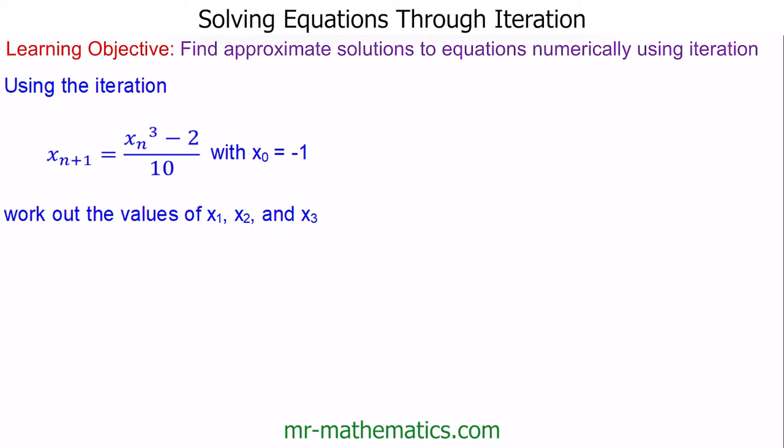To use iteration to solve an equation, we start with an initial value x₀. We substitute this value into our iteration formula in place of xₙ, and this gives us a new value, x_{n+1}. The more we do this, the closer we get to our actual solution.